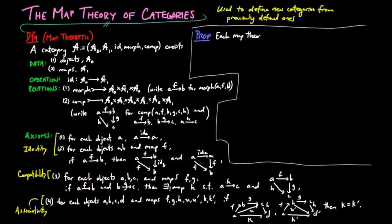We can use this to prove that each map theoretic model of a category yields an object morphism model of a category, and we sketch the proof.